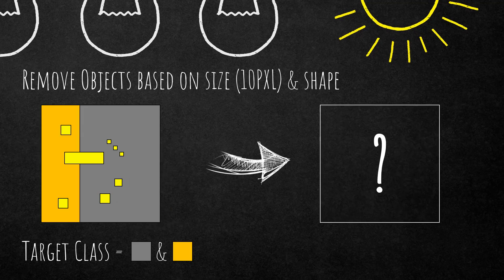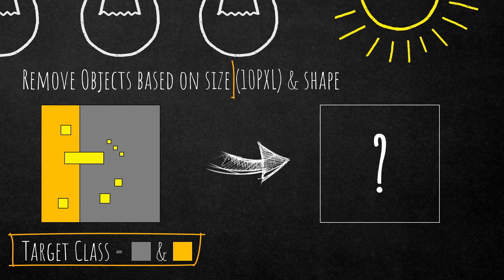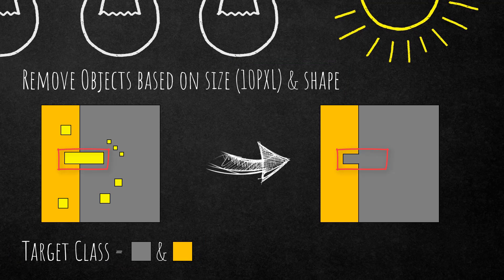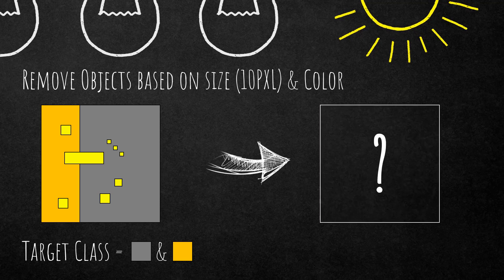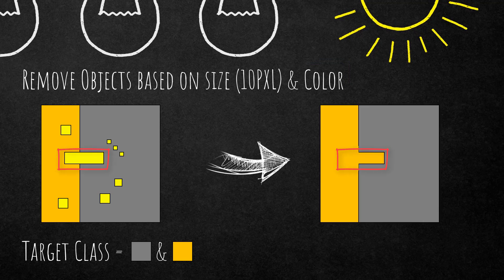A more difficult example: here we have two target classes in the background — orange and gray — and we want to remove image objects smaller than 10 pixels based on shape. The interesting case is the large image object in the center, which shares its border with both orange and gray but approximately 60% with the gray class, so it merges into gray. If we change the setting from shape to color, that same large yellow object dissolves into the orange class because spectrally it is more similar to orange than to gray.